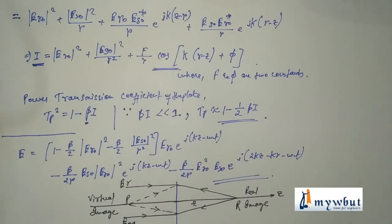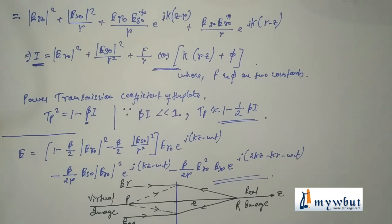Now coming to the last part of the chapter: the applications of hologram. First, a hologram can store information in 3D. Second, the information on a hologram can be decoded, so a hologram is a reliable medium of data storage. Third is the application to 3D cinema, that is in holographic motion pictures. That's all for this chapter and that's all for this module also. Thank you, meet you in the next module.